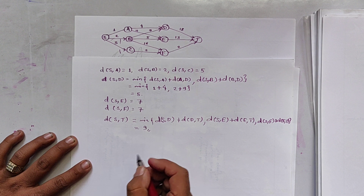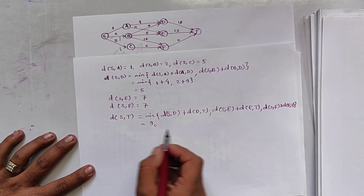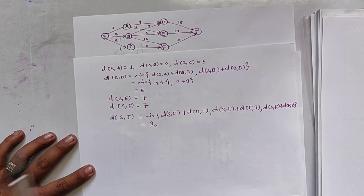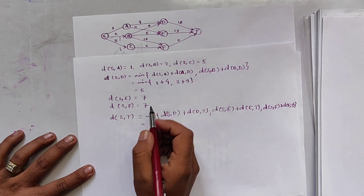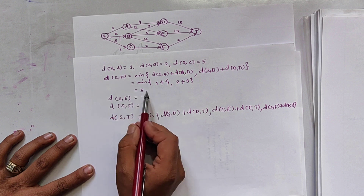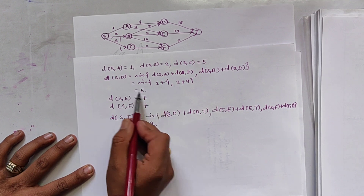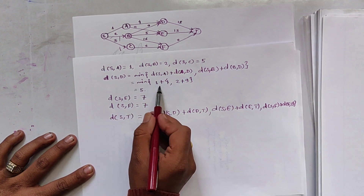The result of 9 is the same as the previous value obtained using the forward approach. However, in this process there is a difference because we substitute values starting from the initial process.